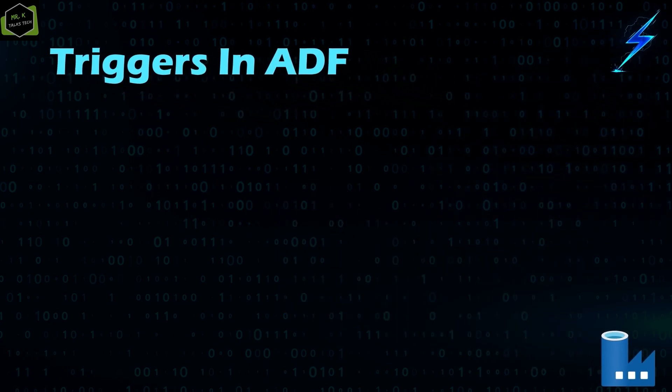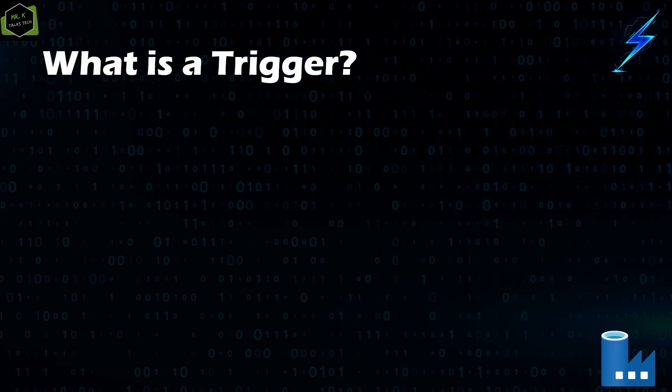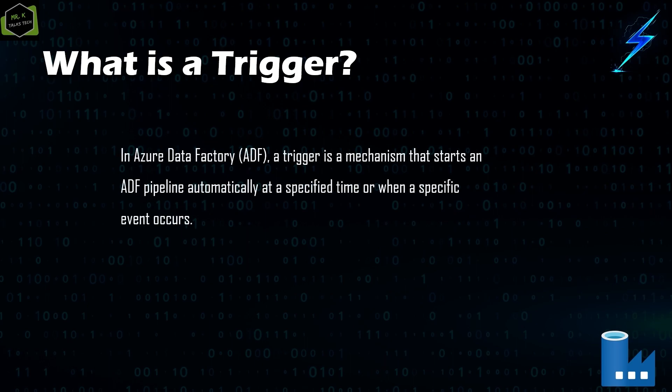Firstly let's see what is a trigger. A trigger in Azure Data Factory is a mechanism that starts an Azure Data Factory pipeline automatically at a specified time or when a specific event occurs. If you create a pipeline in Azure Data Factory you can run the pipeline in two ways: either you can trigger the pipeline manually, or you can set up a trigger so that it can run the pipeline in an automatic way.